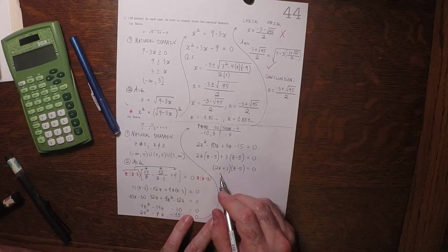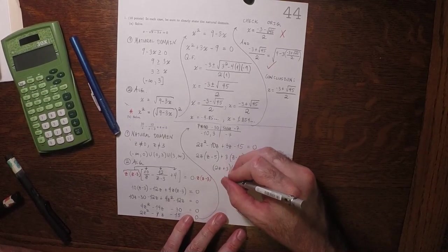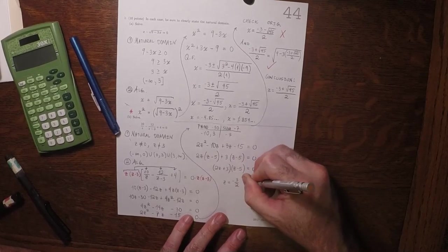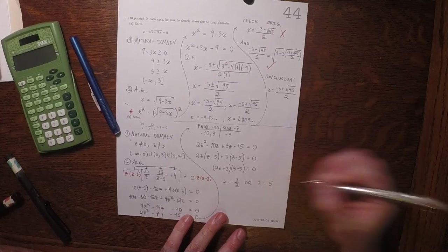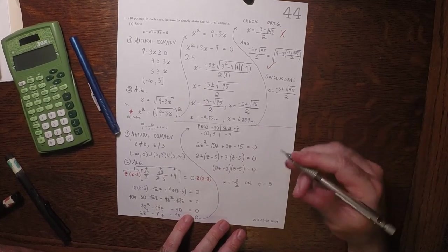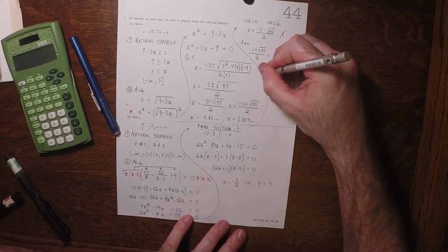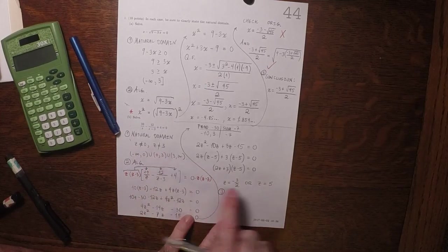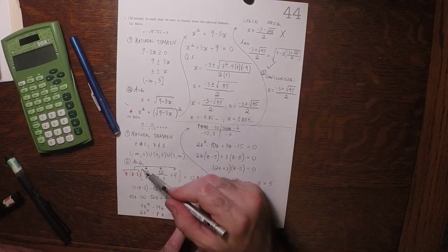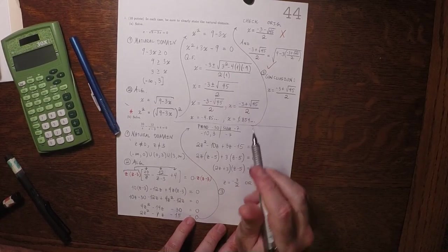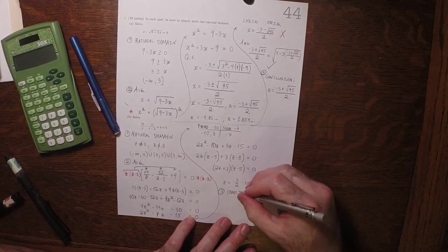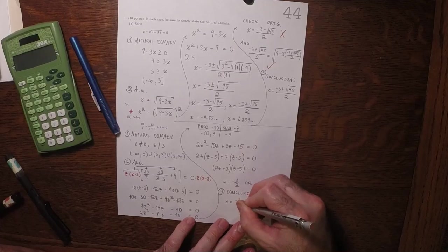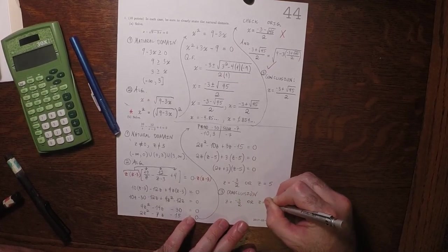So the solutions are, from this one, we get z is negative 3 halves. Both of those are in the natural domain, because the natural domain was anything except 0 and 3. So those are fine. And then we didn't have to do any, all of the operations were truth preserving. So we don't even need to check. So the answer is both of those. z is negative 3 halves or z is 5.